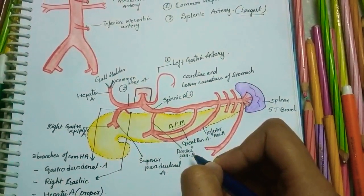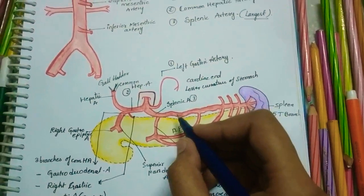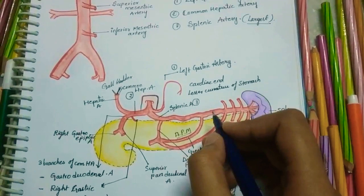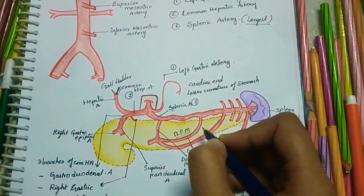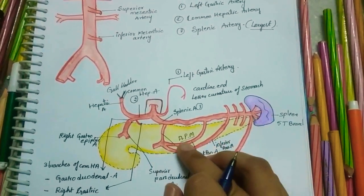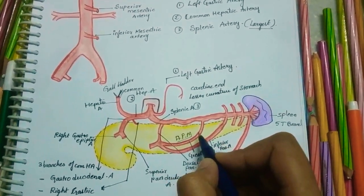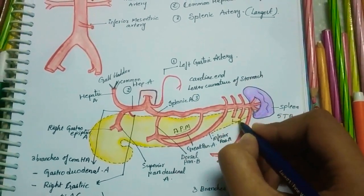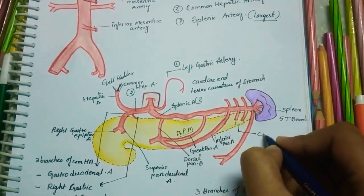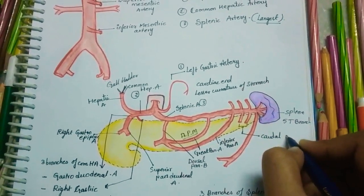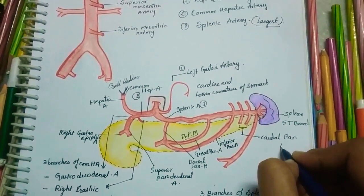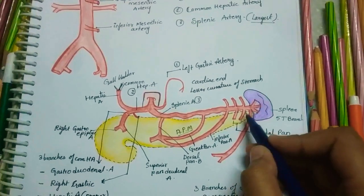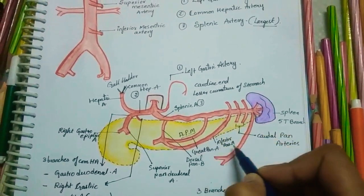The dorsal pancreatic artery arises near the splenic artery. The great pancreatic artery, or arteria pancreatica magna, enters the body of the pancreas and runs along the main pancreatic duct. The caudal pancreatic branches together form the inferior pancreatic artery.